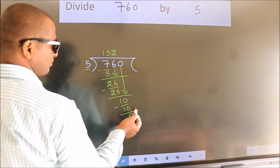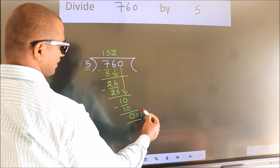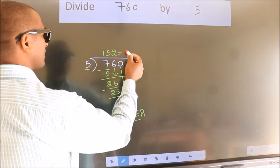No more numbers to bring it down. So we stop here. This is our remainder. This is our quotient.